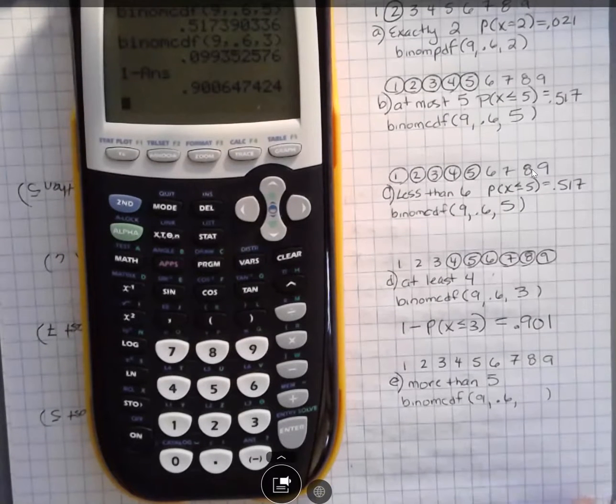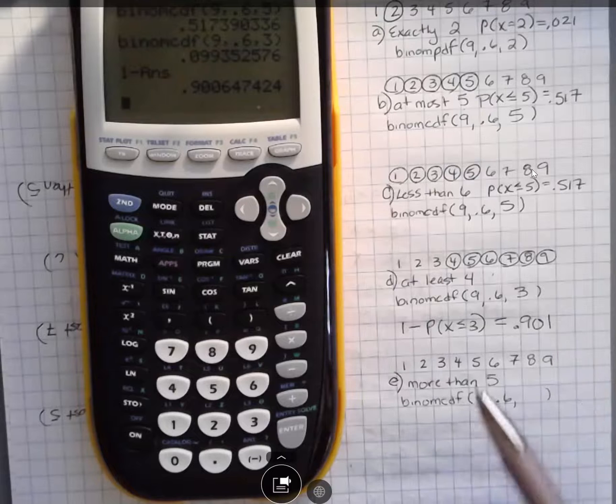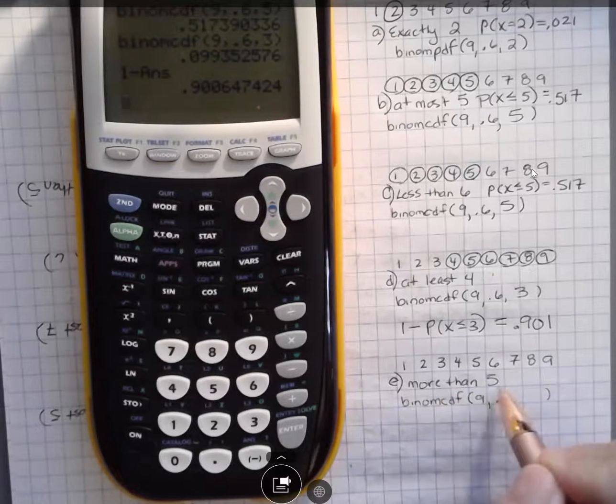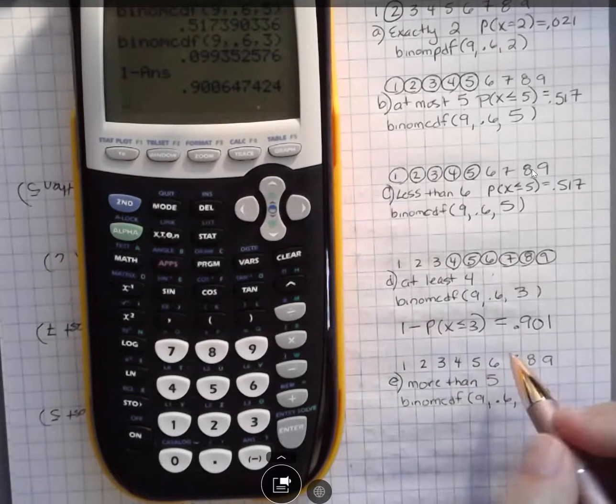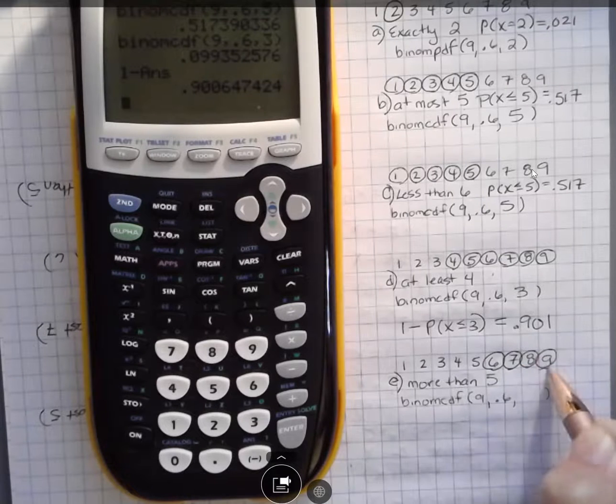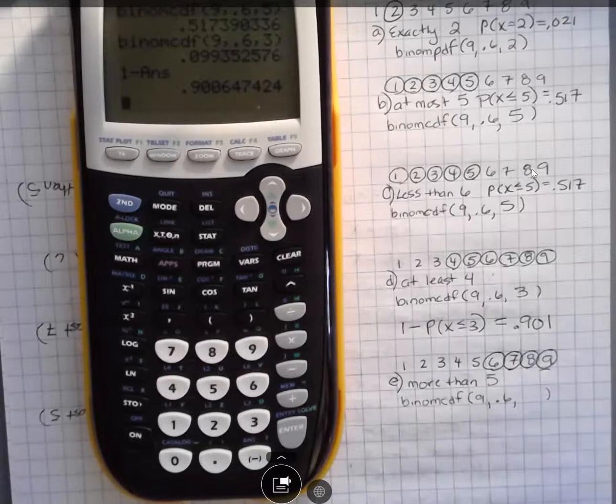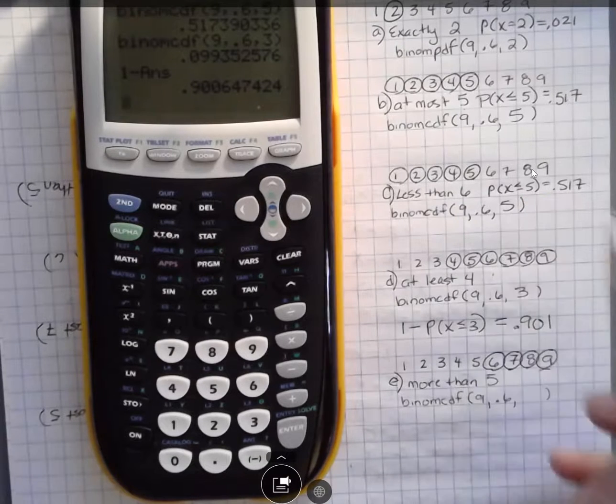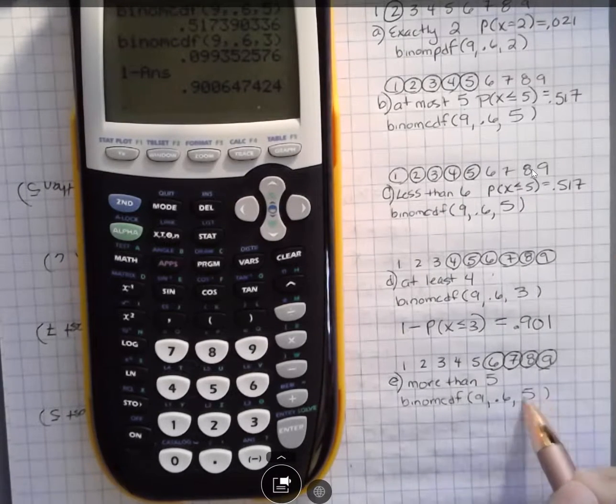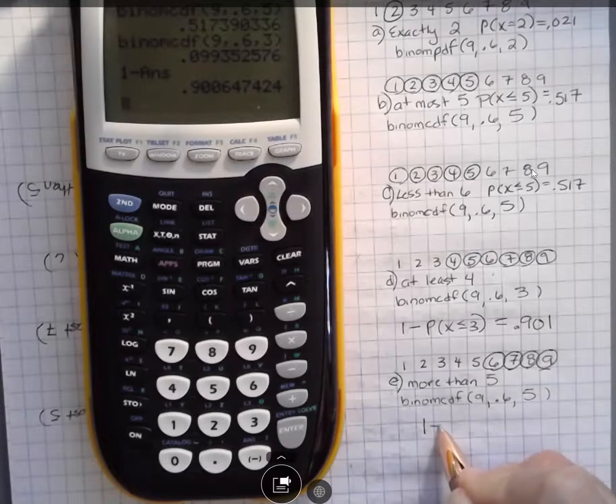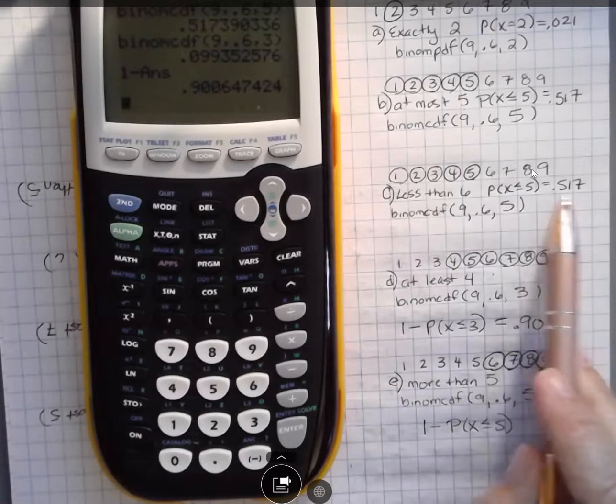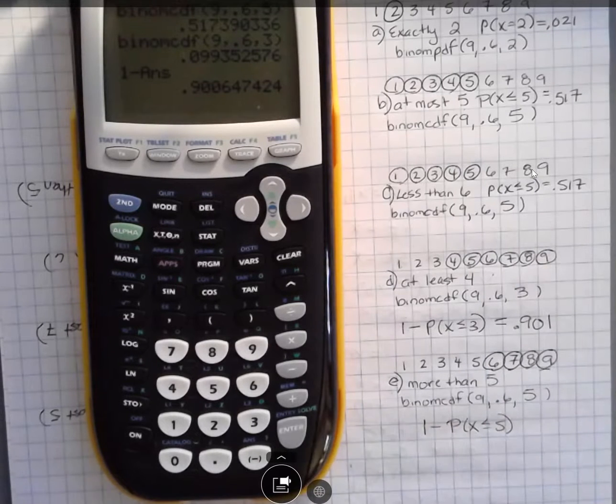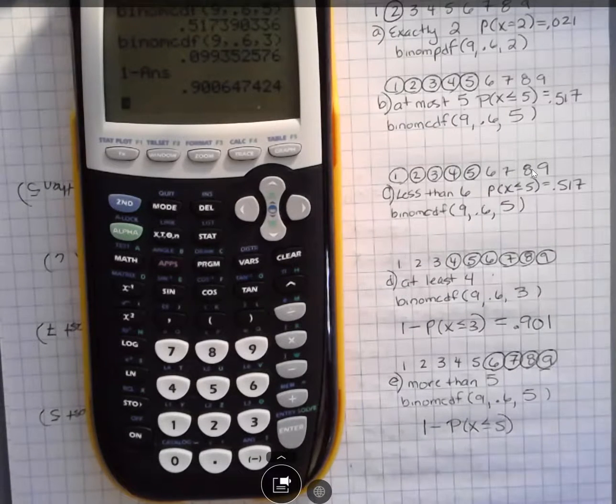If we do the same thing for more than five, we're going to think about more than five. It's saying more than five, not five. So that means it's six, seven, eight, or nine. And again, that's to the right. So we want to look to the left. So we want to say, what if it's less than or equal to five? And we want to say one minus that, one minus the probability that X is less than or equal to five. And we already know that answer from up there.